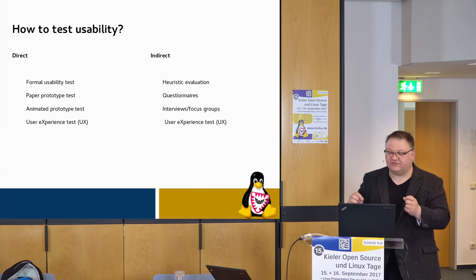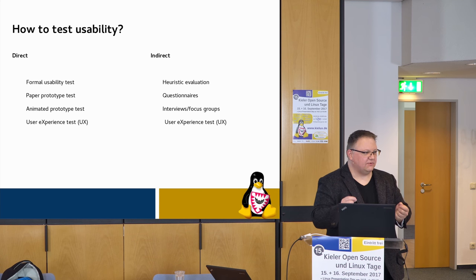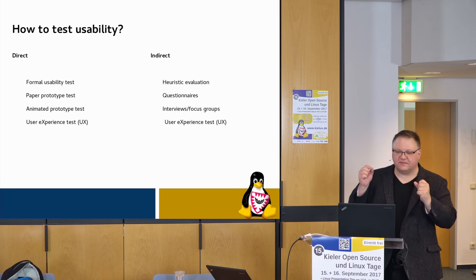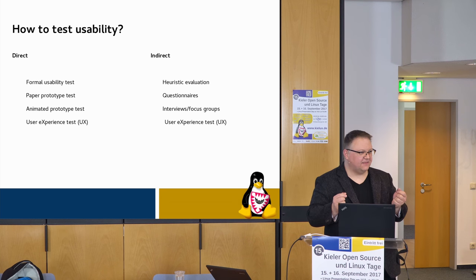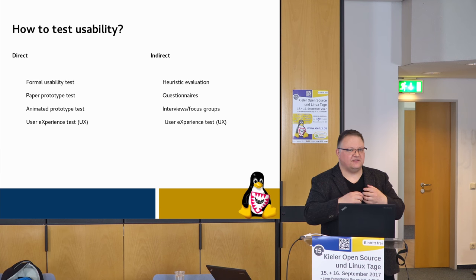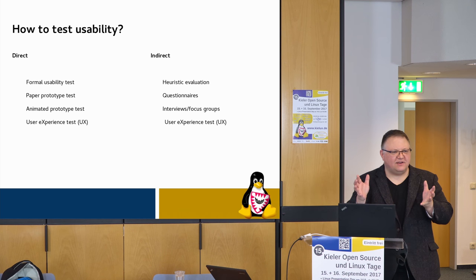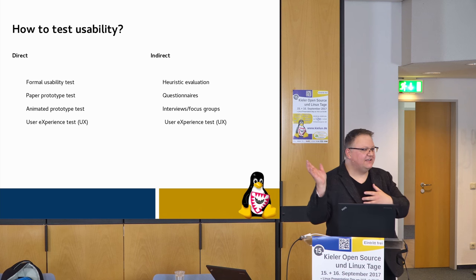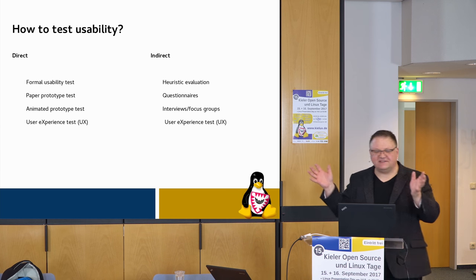So there are different ways to test usability. You can do direct testing or indirect testing. For direct testing, things like a formal usability test — which is the most common and actually easiest to explain, so I'm going to talk about it today. Even though it sounds very formal, it's actually very easy to do.